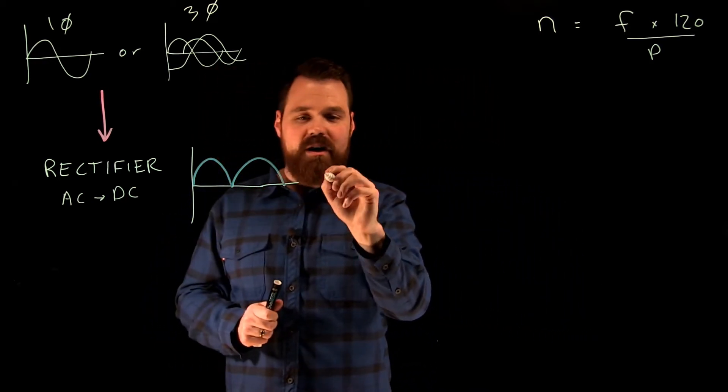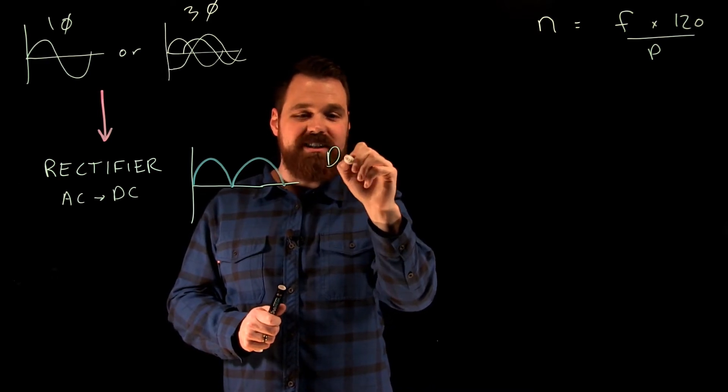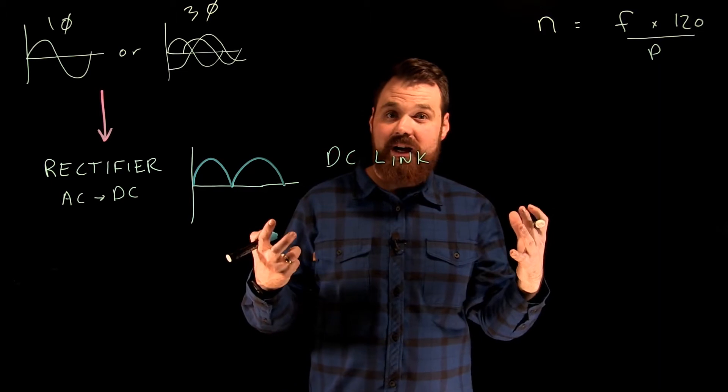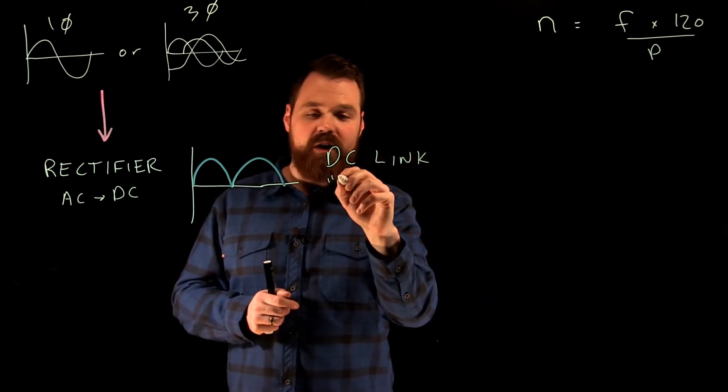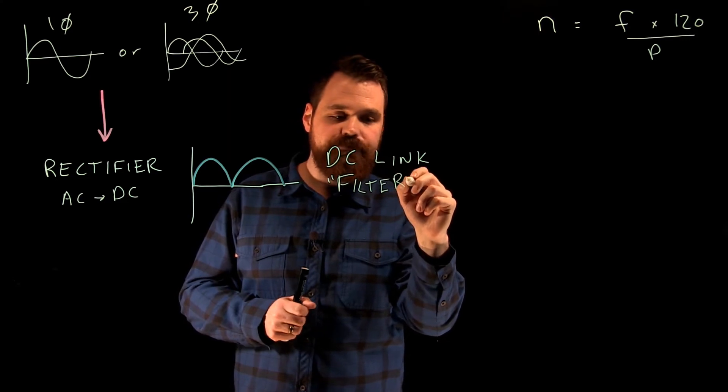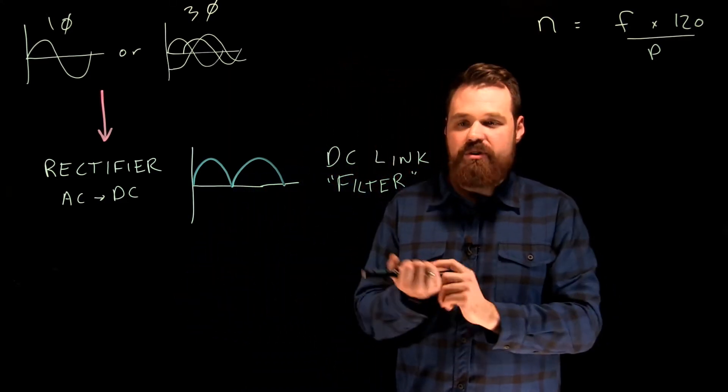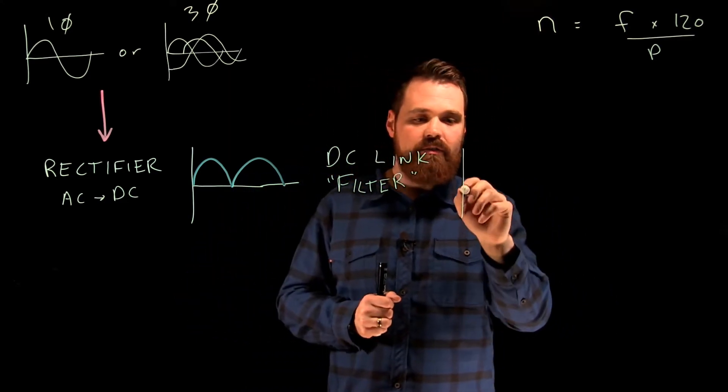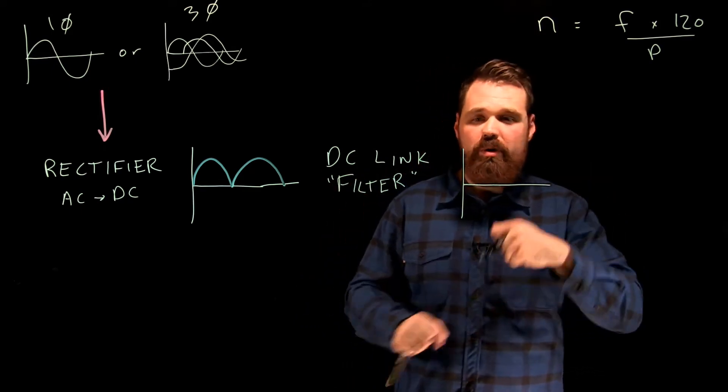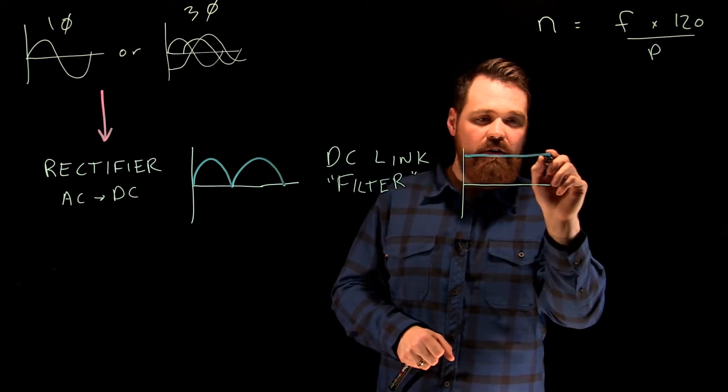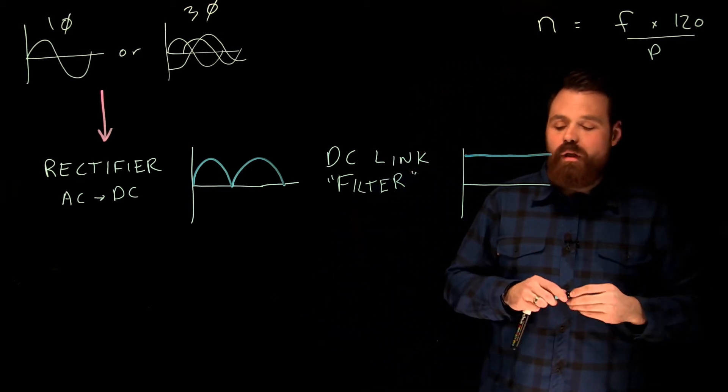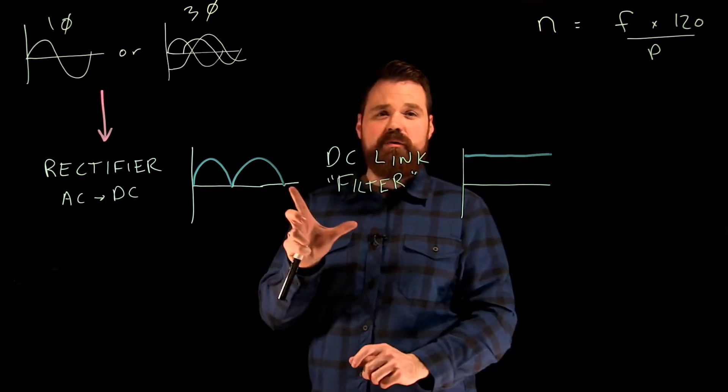Then we take that and put it into the DC link inside the VFD, also called a filter. Outside of that filter, once we're out of that filter, now we get a power output that is a very clean straight DC output.